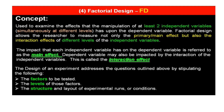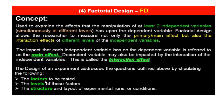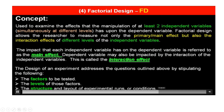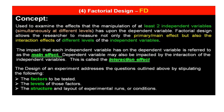The impact that each independent variable has on the dependent variable is referred to as the main effect. The dependent variable may also be impacted by the interaction of the independent variables — this is called the interaction effect. The design of an experiment addresses these questions by stipulating: the factors to be tested, the levels of those factors, and the structure and layout of experimental runs or conditions.